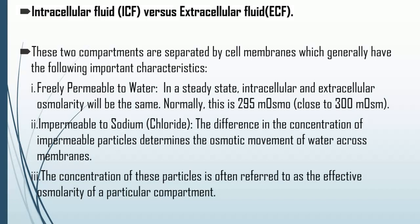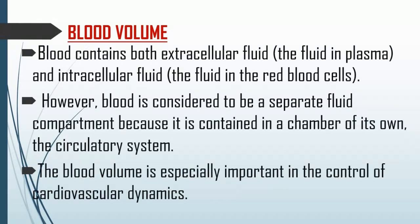Blood volume contains both plasma — the fluid component — and packed cells, which include red blood cells, white blood cells, and platelets. Total blood volume equals plasma times 100 over (100 minus hematocrit). This is something we will discuss in more detail.